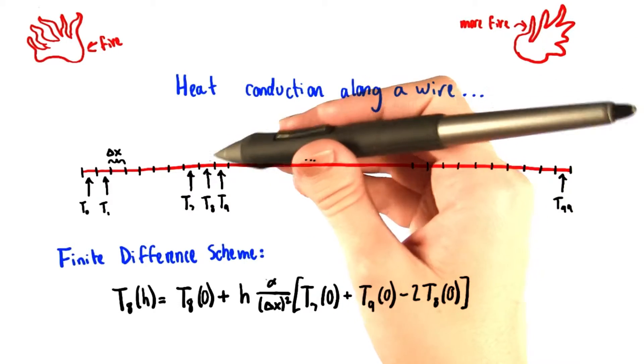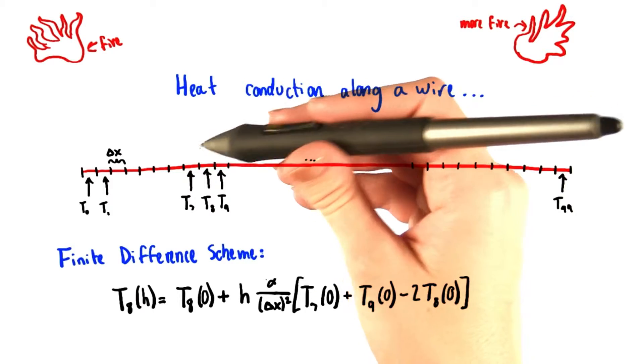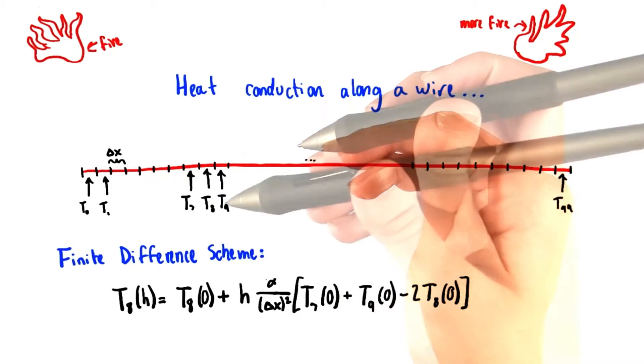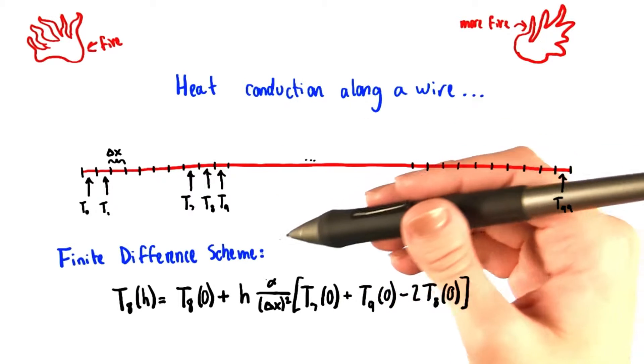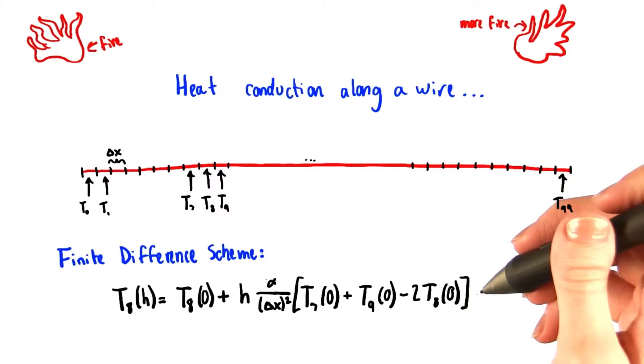In the same way, the eighth segment is going to feed energy into both the seventh and the ninth segments. To express the temperature of the eighth segment after a time step, we can use the finite difference scheme to come up with this equation right here.